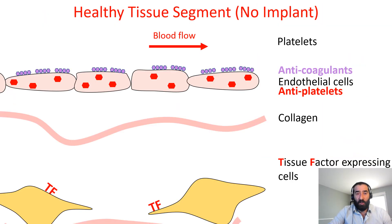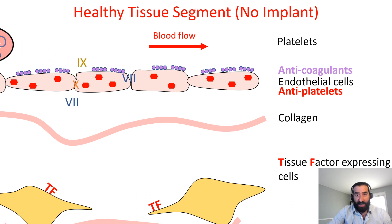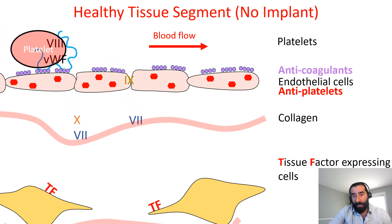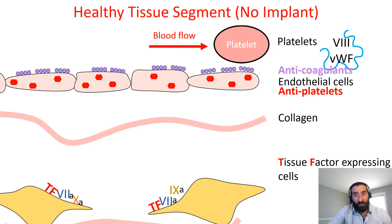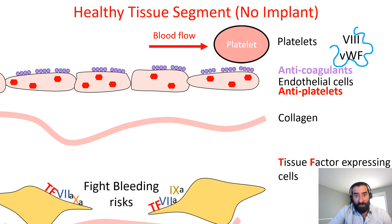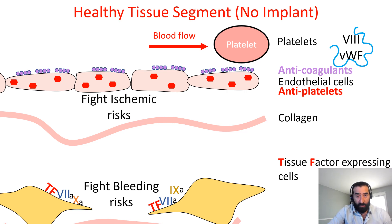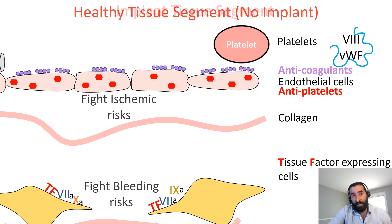Healthy blood vessels are always managing bleeding and ischemic risks. Even in the absence of injury, the small components of the coagulation cascade get past the endothelial cells and get activated on the tissue factor cells — this is the body getting ready to form a clot and fight bleeding risks. The endothelial cells, on the other hand, prevent clot formation by the constant production of anticoagulants.